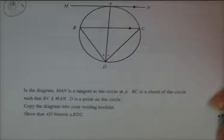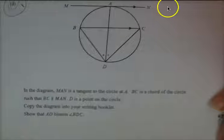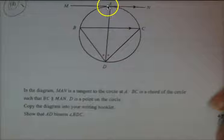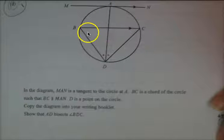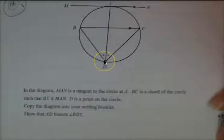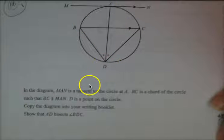Looking at the questions you're asking for help with, here's the first one in the diagram. MAN is a tangent to the circle at A. BC is a chord of the circle. We know that these two lines are parallel, so BC is parallel to MAN. D is a point on the circle. You have to copy the diagram into your workbook and prove that AD bisects angle BDC.